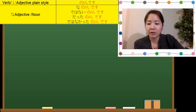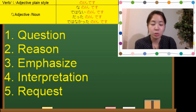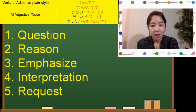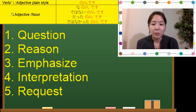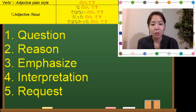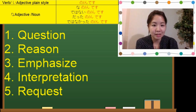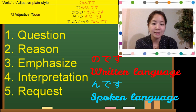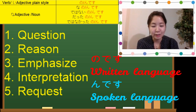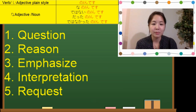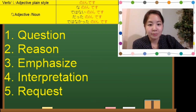It has several meanings. We use のです and んです when we ask questions, when you talk about the reason, when you emphasize a sentence, when you make an interpretation, or when you make a request. The difference between のです and んです is very simple: のです is used for written form and んです is used for spoken form. Now let's look at some examples.